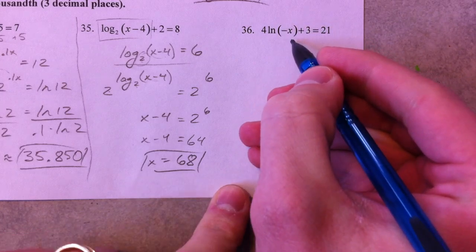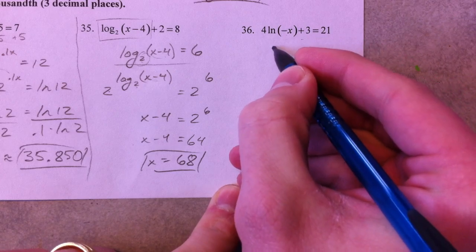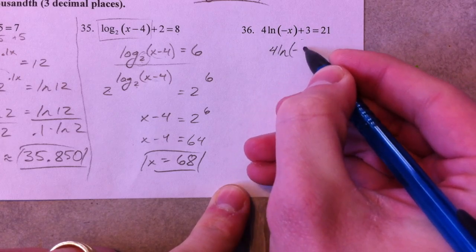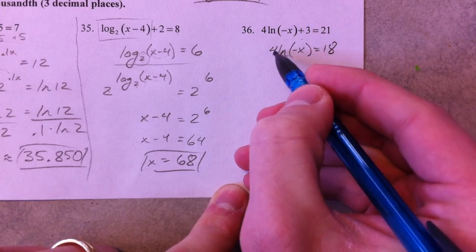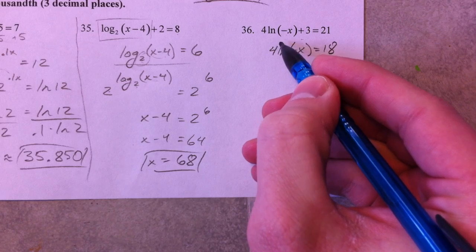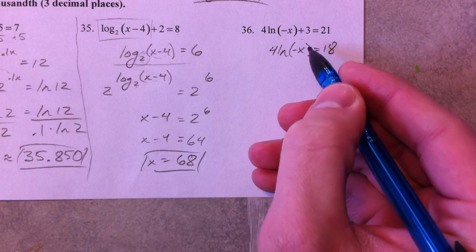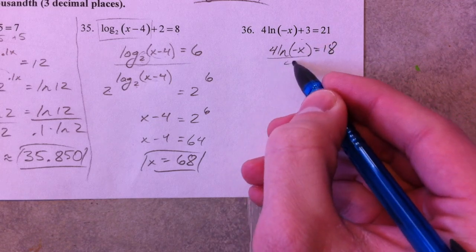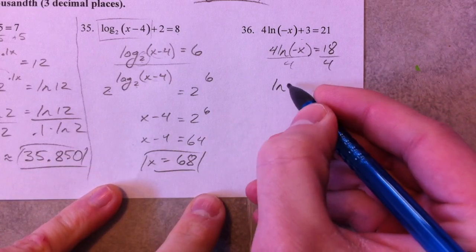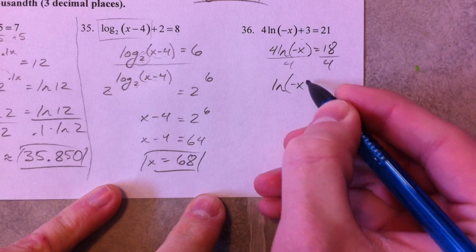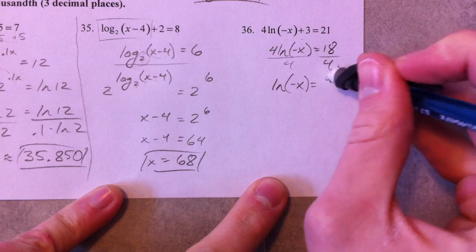Last problem. So I want to get the x by itself. Least connected with the x is this plus 3, so we subtract 3. And we get 18. Least connected to the x is the 4. Now you could put the 4 up top and you have x to the 4th, but we want to divide by the 4 because getting x to the 4th is going to be a lot more difficult. And the fact that you have to take the 4th root. So natural log of negative x is 18 over 4, 9 halves, or let's just say 4.5.